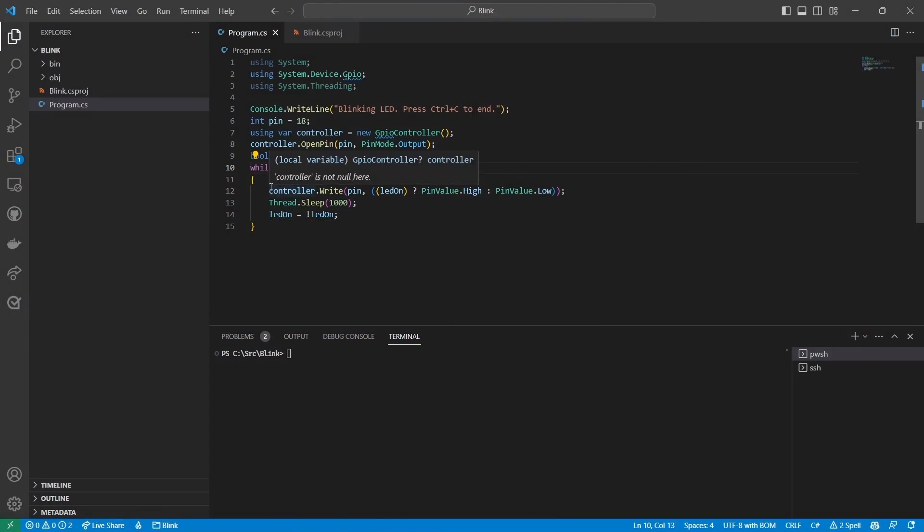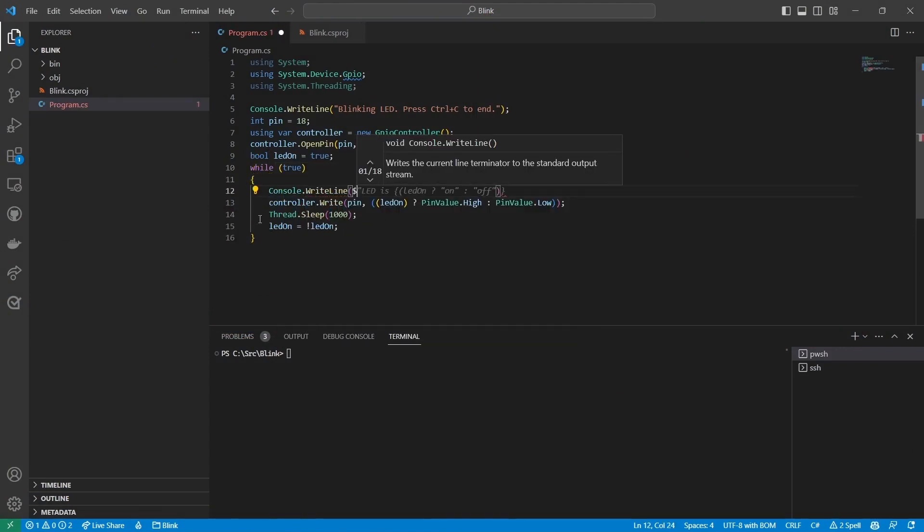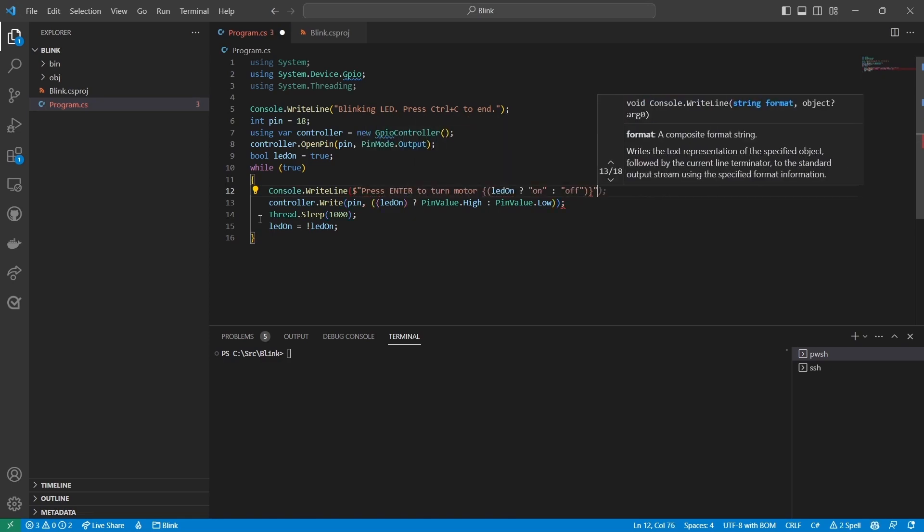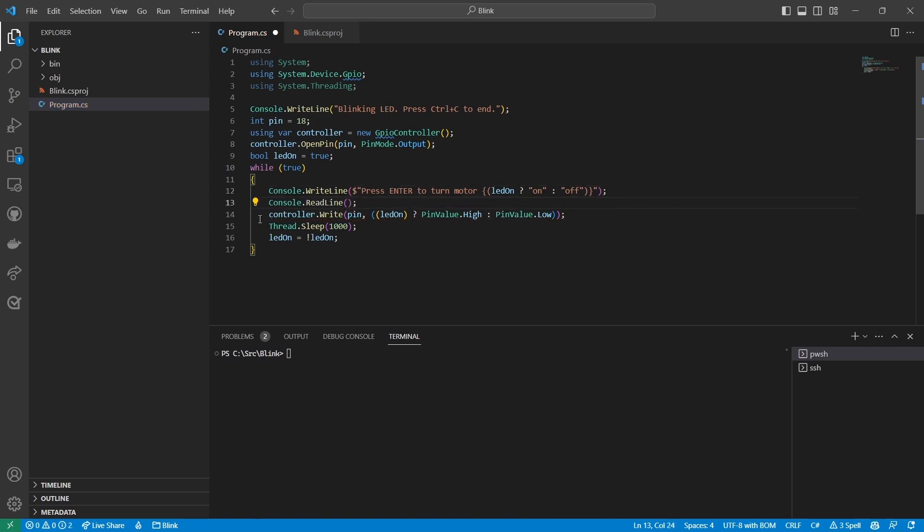My app as I've written it isn't really useful for controlling the motor, because it toggles pin 18 every second. That's not really enough time to see the motor spin, so I'll modify the app to prompt the user to press enter to toggle the relay. Then I'll deploy my app again.